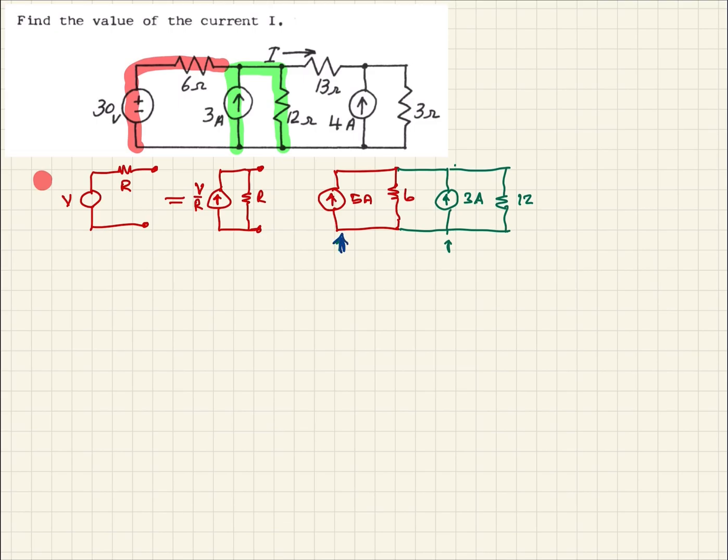So let's redo this. This will be this guy and this guy. So it's 5 plus 3. We'll have a new current source, which will be 8 amps. And then we'll notice that we now have a 6 ohm and a 12 ohm resistor in parallel.